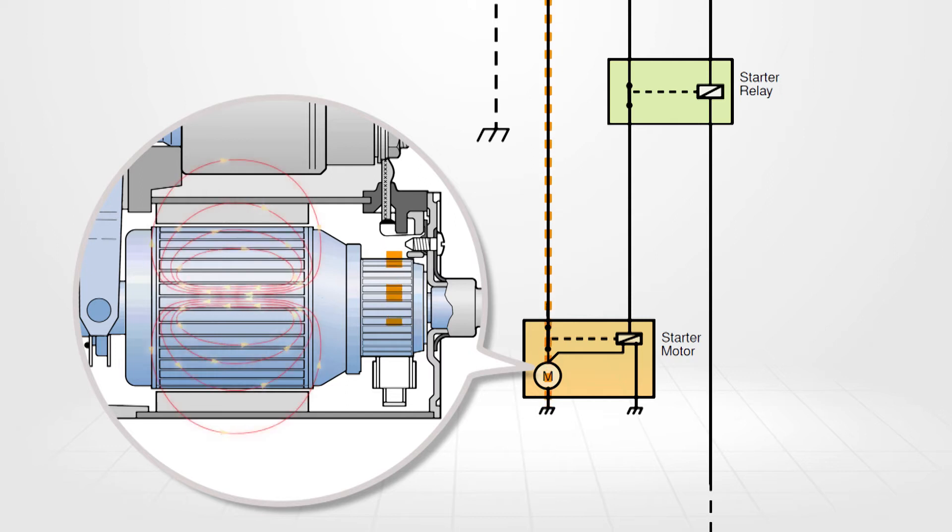The current exits the brush at the commutator segment where it flows through a set of windings creating a strong magnetic field.